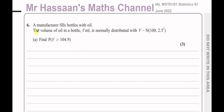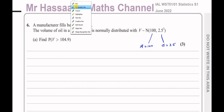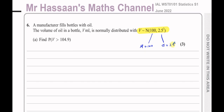This question is about normal distribution. A manufacturer fills bottles with oil. The volume of oil in a bottle, V millilitres, is normally distributed — written as V ~ N(100, 2.5). The first number is the mean, so the mean is 100. The second number is the variance, so the variance is 2.5 and the standard deviation is the square root of the variance, which is 2.5. The mean is 100 and the standard deviation is 2.5, not 2.5 squared — that would be the variance.